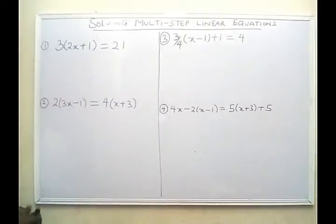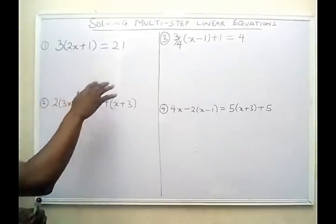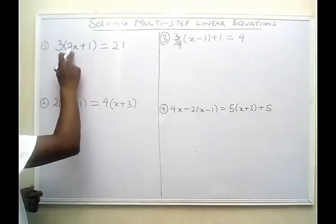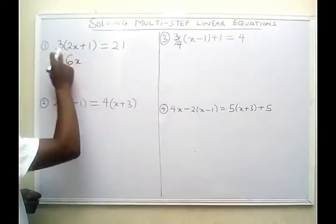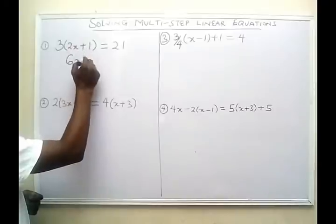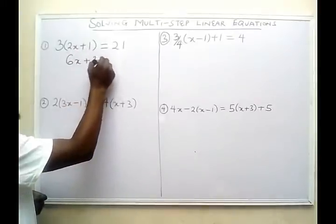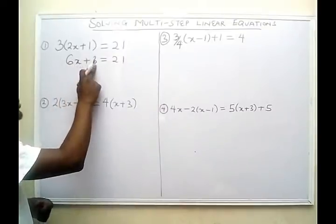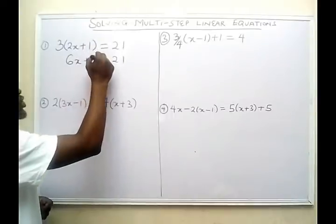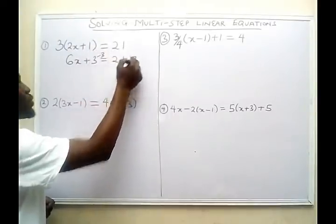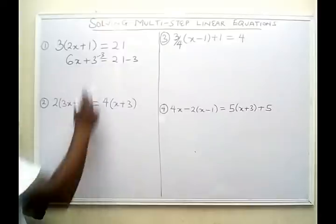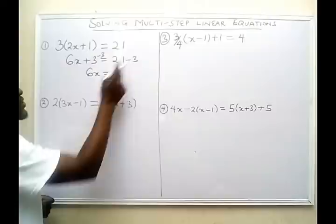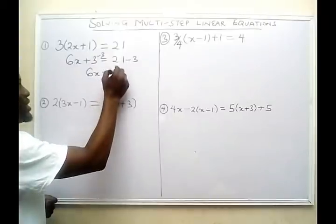Let's solve the first problem on the board. In this problem, we need to remove the bracket as the first thing to do. So 3 times 2x gives us 6x, and 3 times plus 1 gives us plus 3, equals 21. Now I want to find the value of the unknown, so I don't want plus 3 on this side. I'm going to subtract 3 from both sides of the equation — 3 minus 3 would be 0, so I have 6x equals 21 minus 3, which gives me 18.